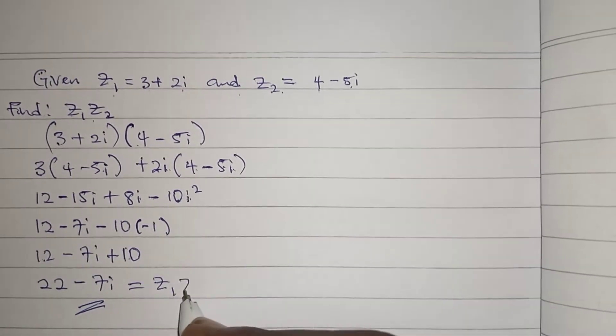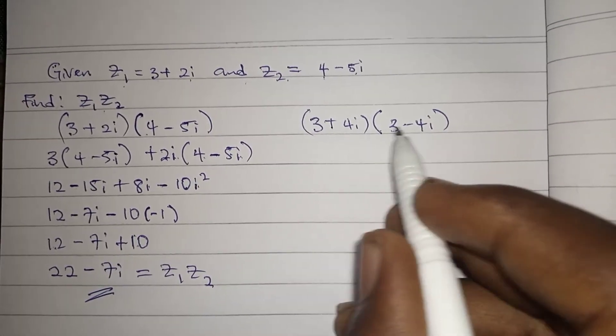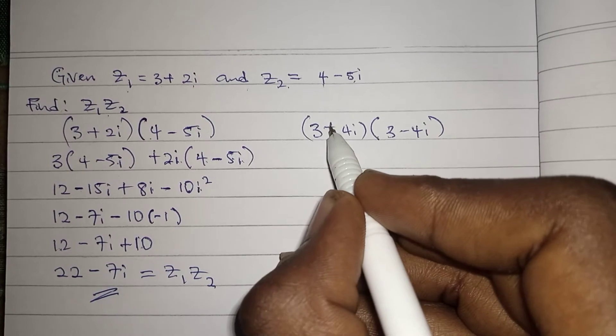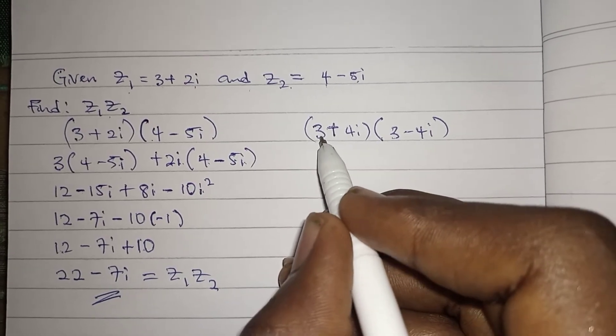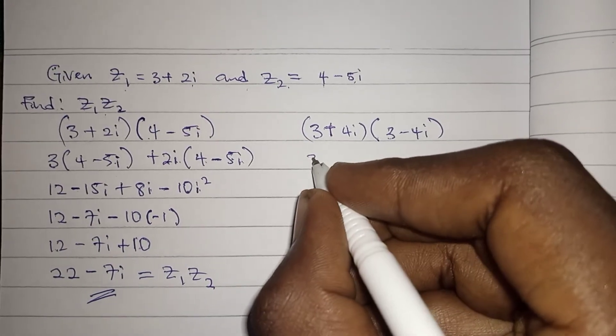If the problem asks to multiply a complex conjugate, the only difference between them is the sign. So this 3 plus 4i and this 3 minus 4i, let's solve using the same method.